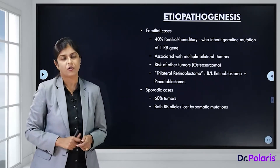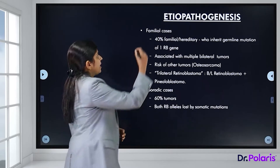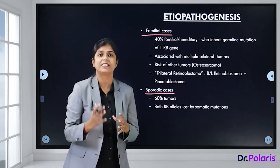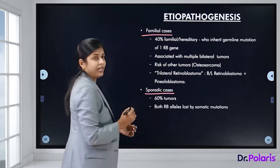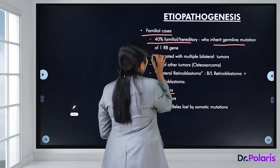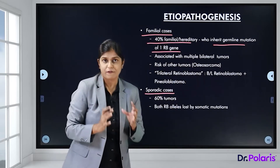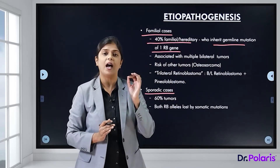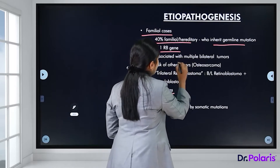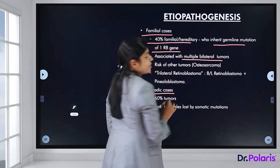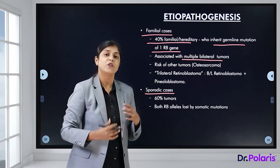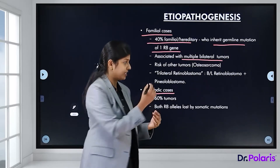Retinoblastomas can be either familial or sporadic. Familial means tumours arising when there is a family history. In familial cases, almost 40 percent inherit a germline mutation of the RB1 gene. The main defect in retinoblastoma is mutation in the RB1 gene or the retinoblastoma gene. Familial cases are usually associated with multiple bilateral tumours, and the risk of development of other carcinomas, sarcomas, or tumours is very high in these cases.